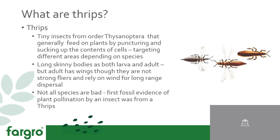But not all species are bad. Some are relied on for pollination, some have fulfilled important roles for control of other thrips species and other pests, and the first fossil evidence of pollination by an insect is actually from a thrips about 100 million years ago.